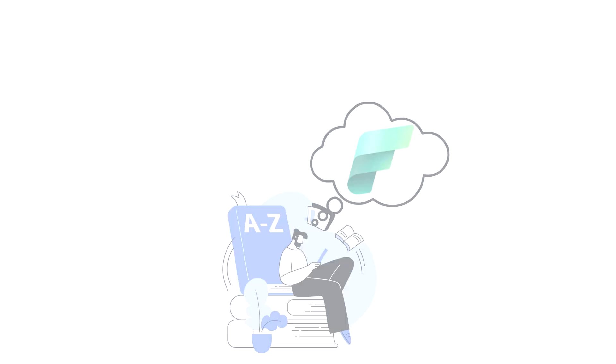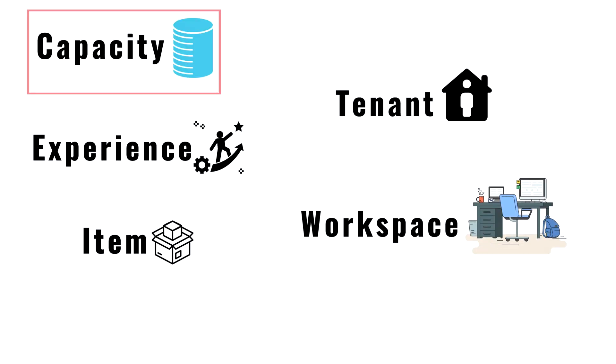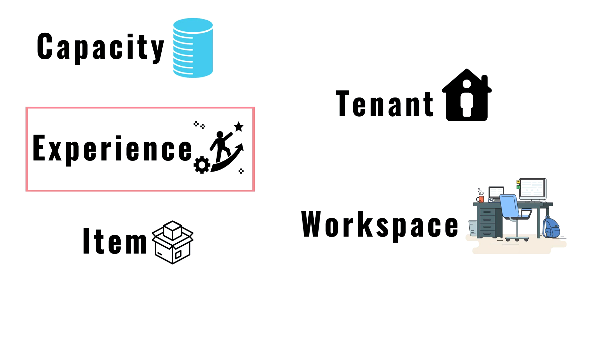Now let's discuss some general terms in Microsoft Fabric. The first is Capacity. Capacity is a dedicated set of resources available at a given time, defining the ability of a resource to perform an activity or produce output. This is not exactly the same as the capacity used in Microsoft Power BI Premium. Fabric offers capacity through Fabric SKUs and trials, and we will also discuss the mapping between Fabric capacities and Power BI Premium capacities. Experiences are a collection of capabilities targeted towards specific functionalities — such as Synapse Warehousing, Real-Time Analytics, or Data Factory.